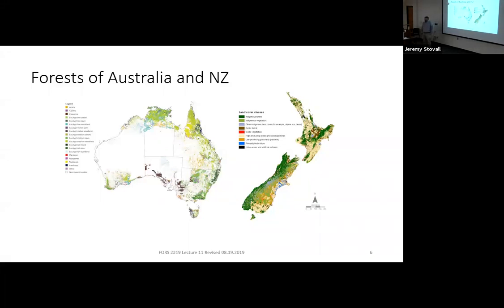A student asks why the west side is like that. It's a prevailing climate shaped primarily by the ocean.